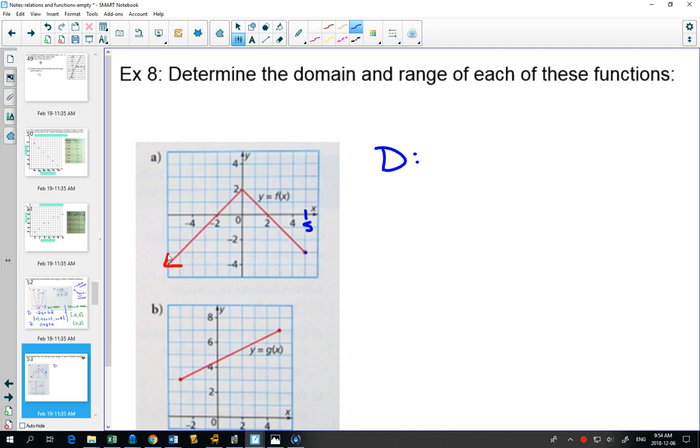So we can write this in set notation. Set notation, we would say x is less than or equal to 5. That's the short form I can write. Probably don't need to show you the long form anymore. All you would need to write is x is less than or equal to 5.